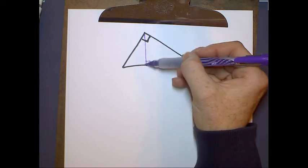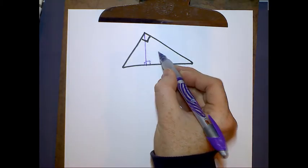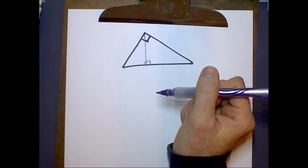When I draw this altitude, what I've done is I've now constructed one, two, and then the big black triangle, the third triangle. Three right triangles.